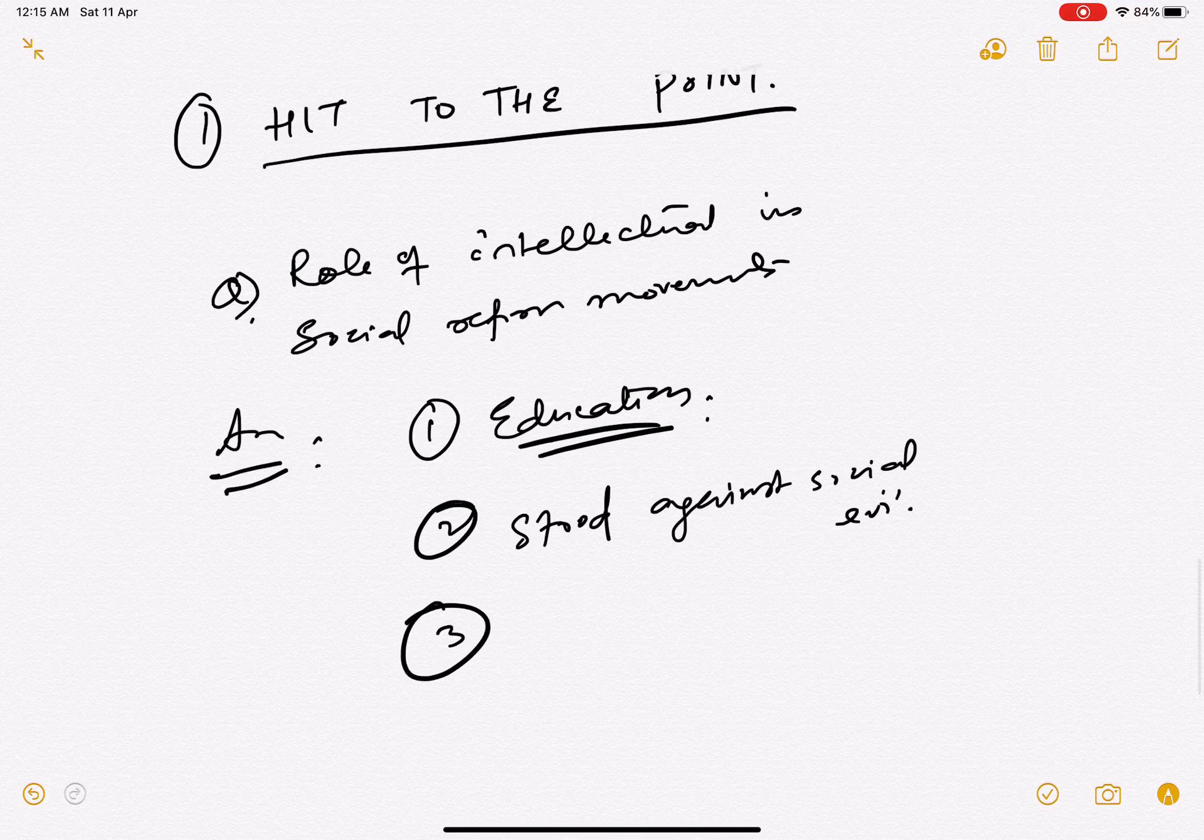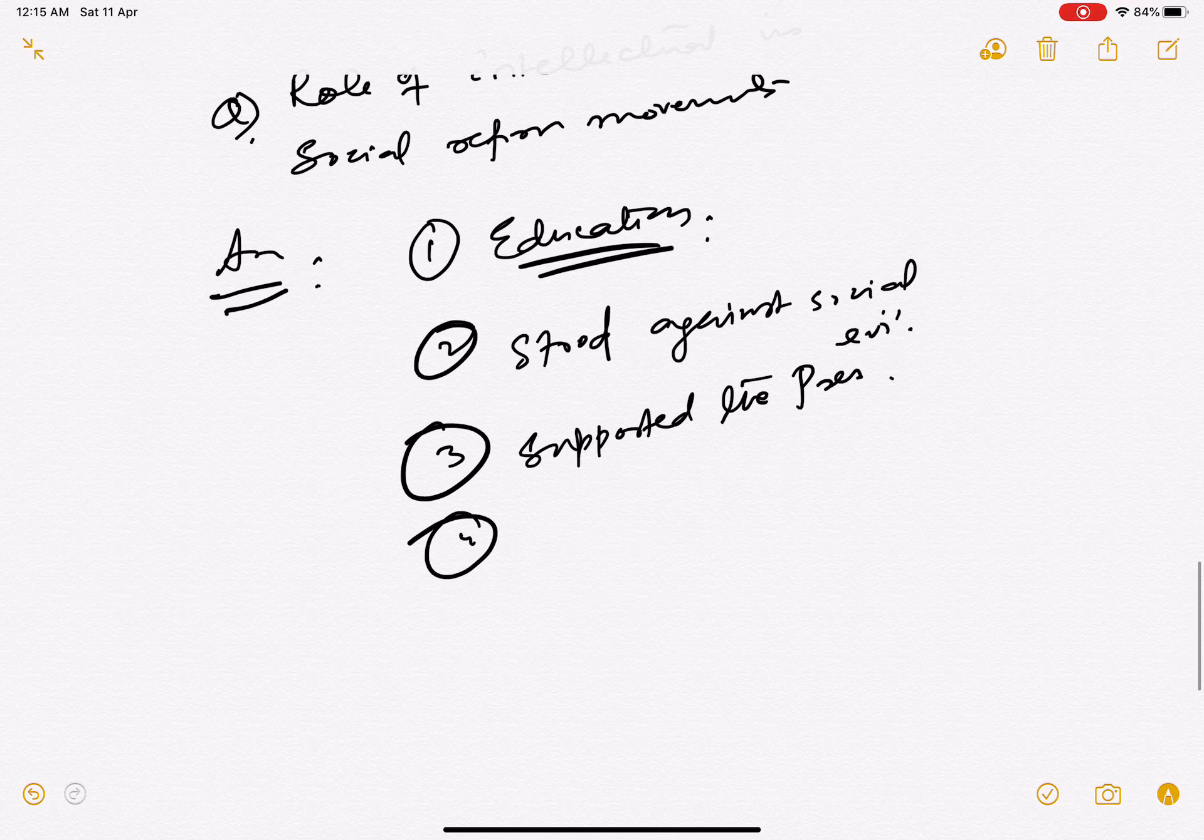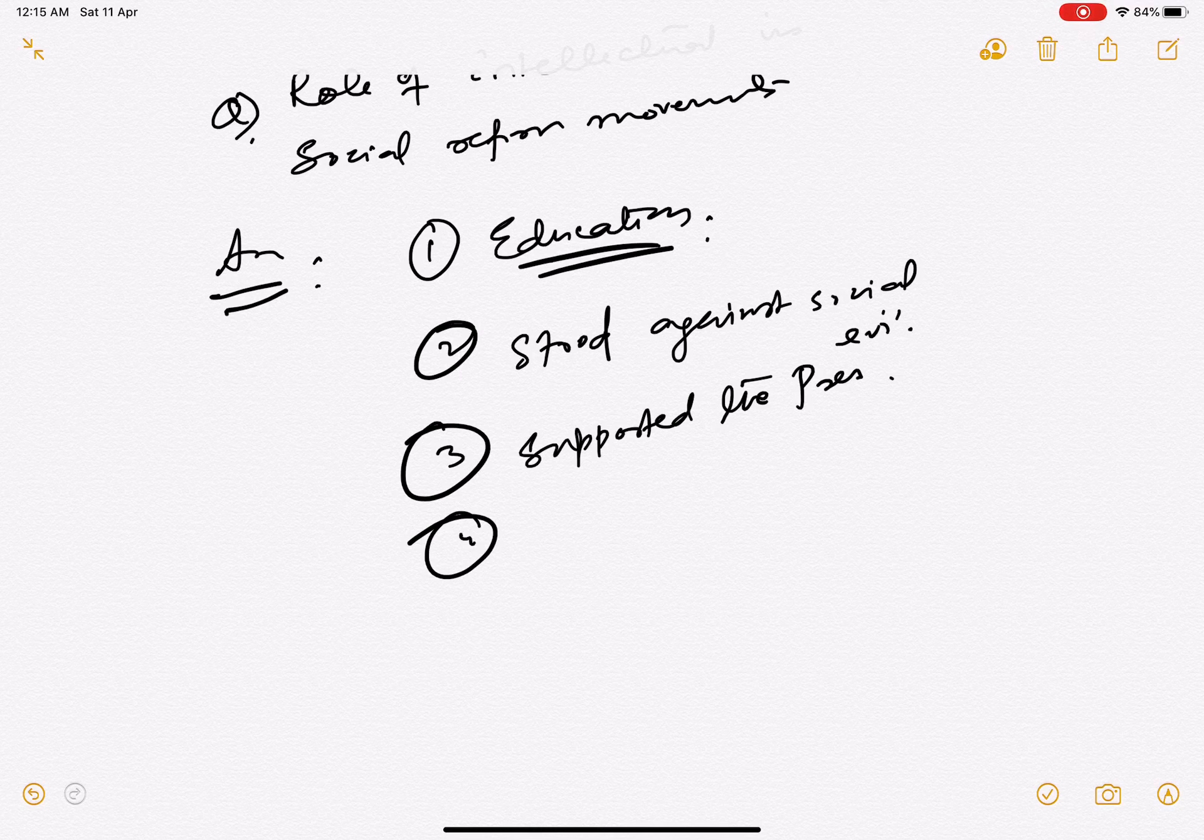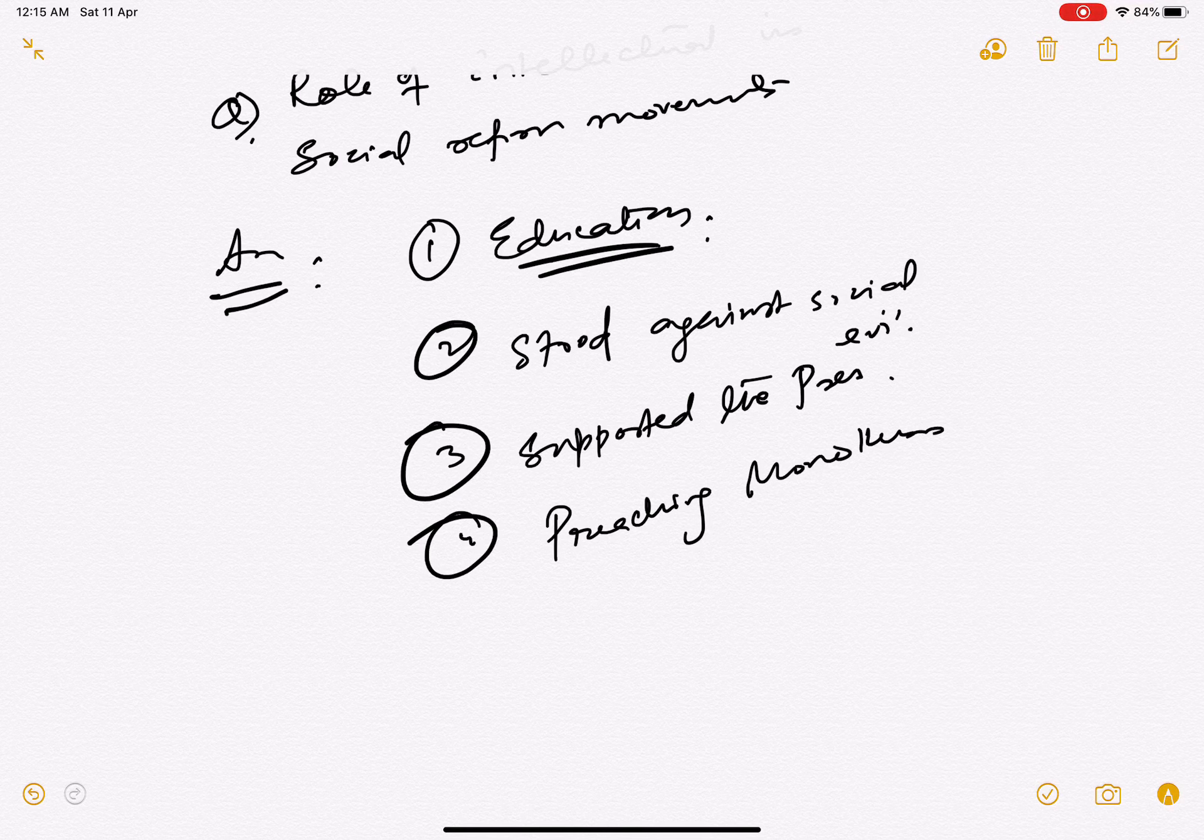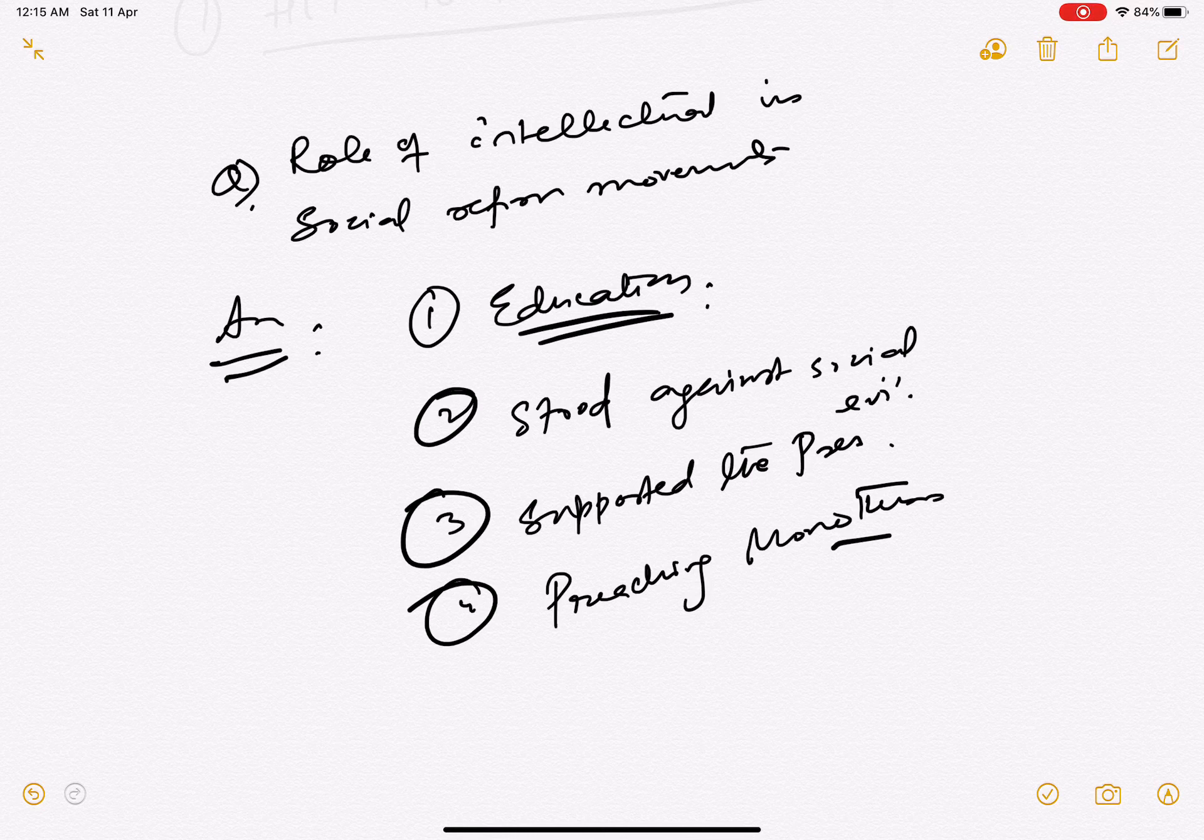How they supported the press. Fourth, how did they stand against modern movements such as preaching monotheism?